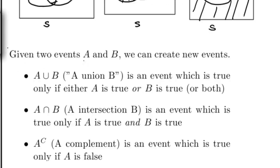So let's say that I have two events called A and B. Then from these events, I can create new ones. The event A union B would be a new event, and it would be true if either A or B, or both, are true.